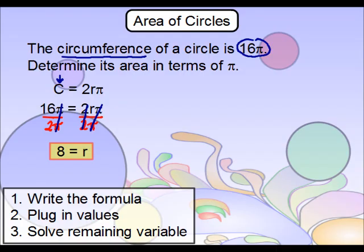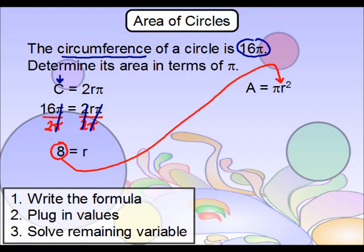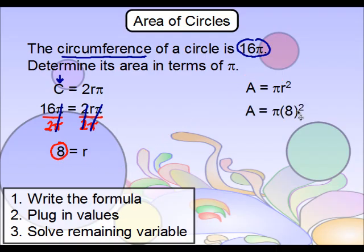We now can go with our area formula, and since we know the radius is 8, we can plug that in over here for r. 8 squared is 64, and just like that, we're done.